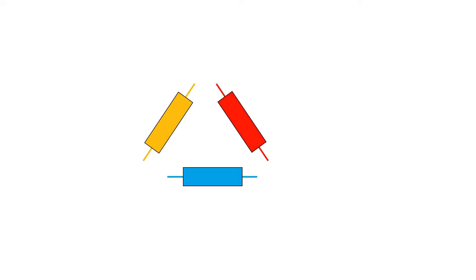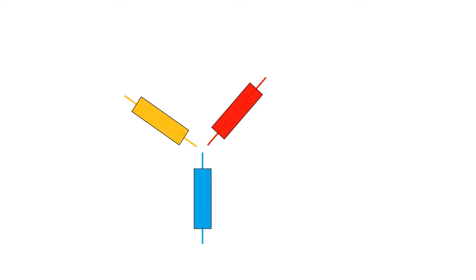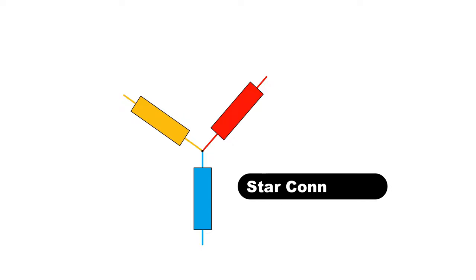Here you can see I have 3-phase winding. Now let us connect one terminal of each winding at a single point — that is, take one wire of all the windings and connect them with each other. So this will be star connection.